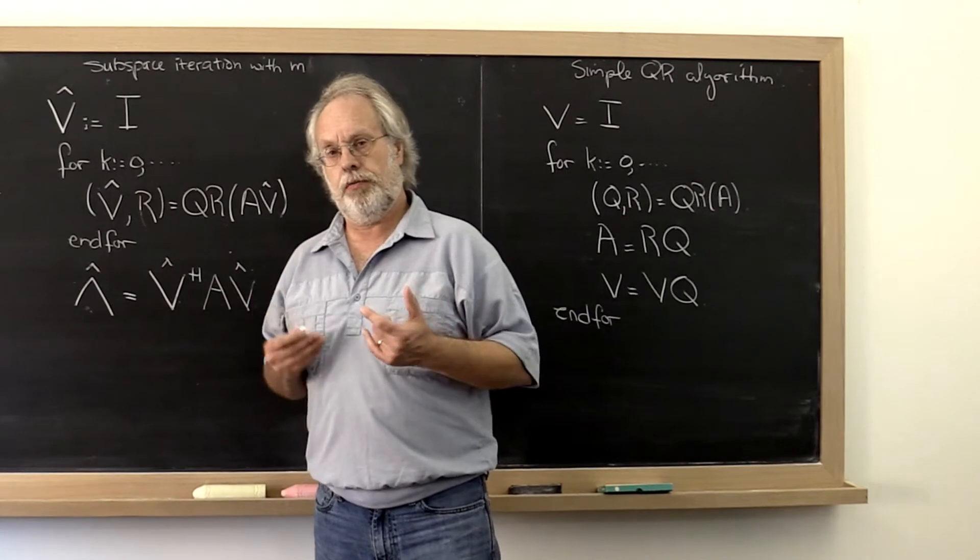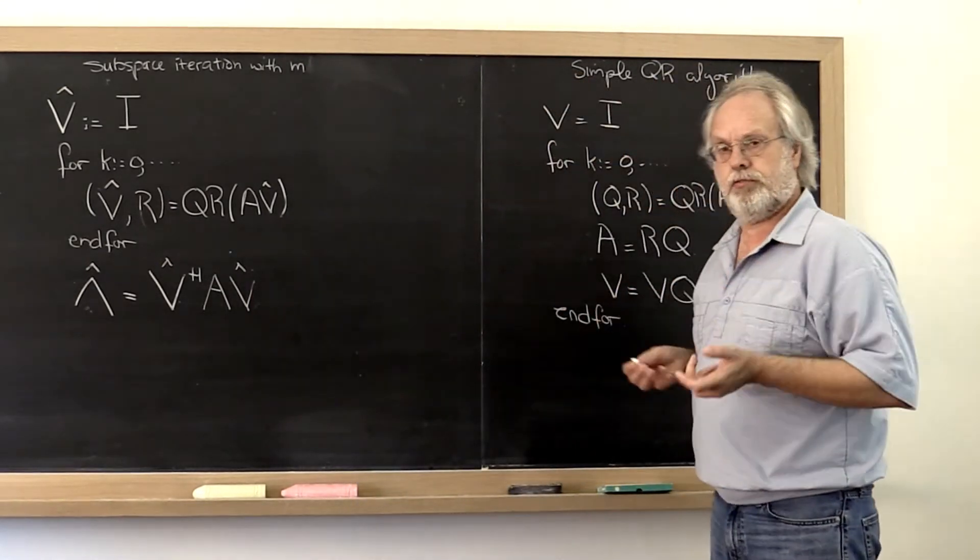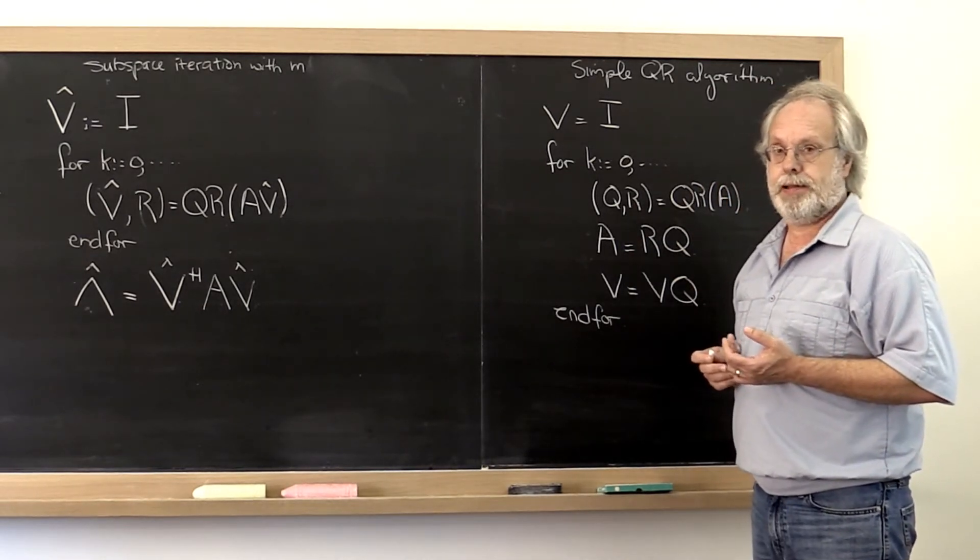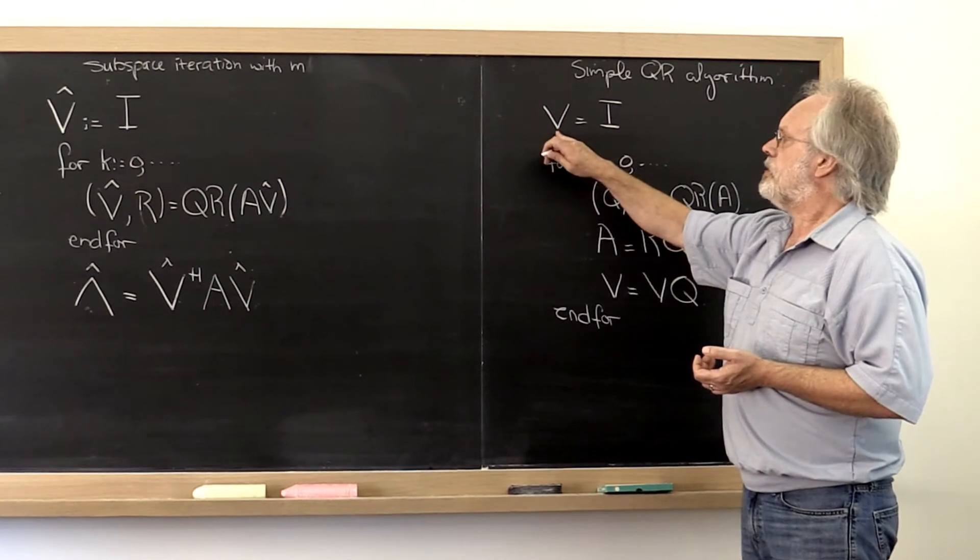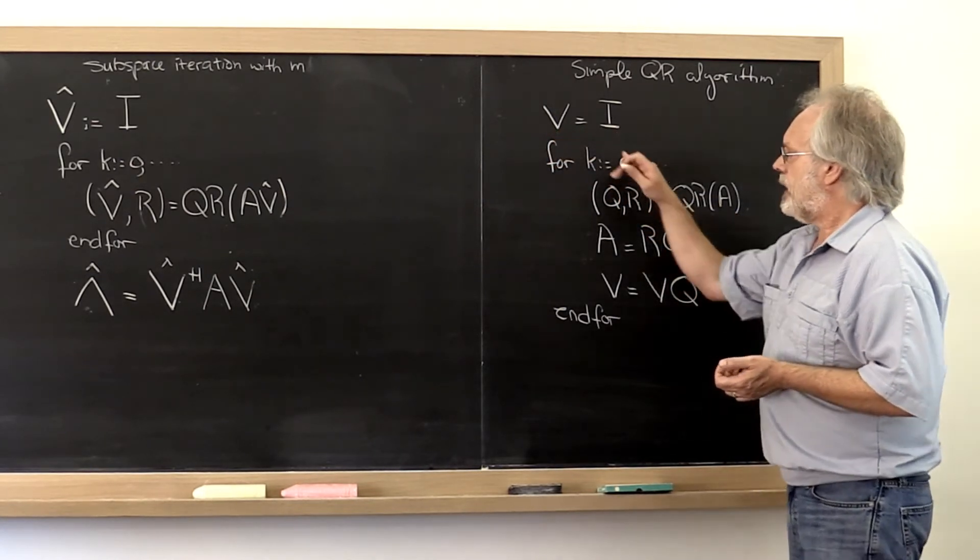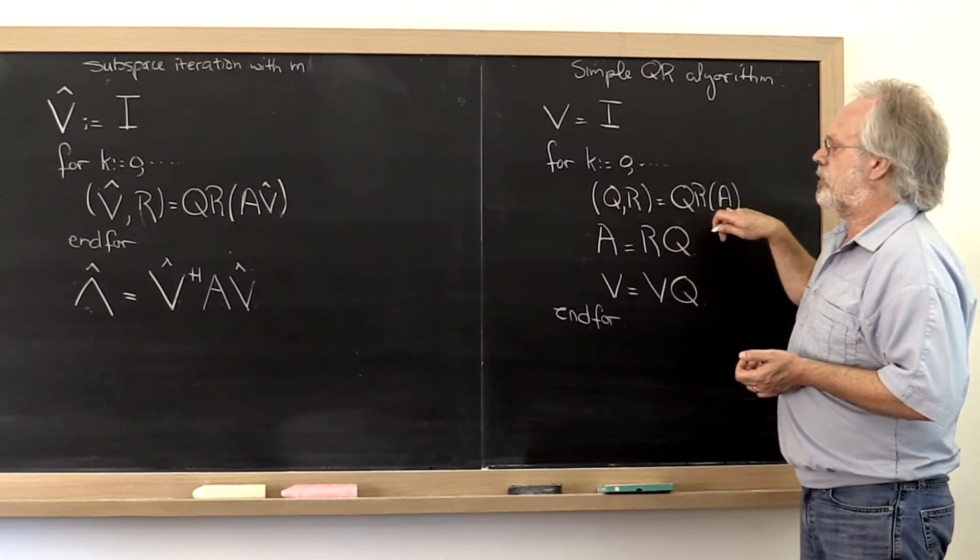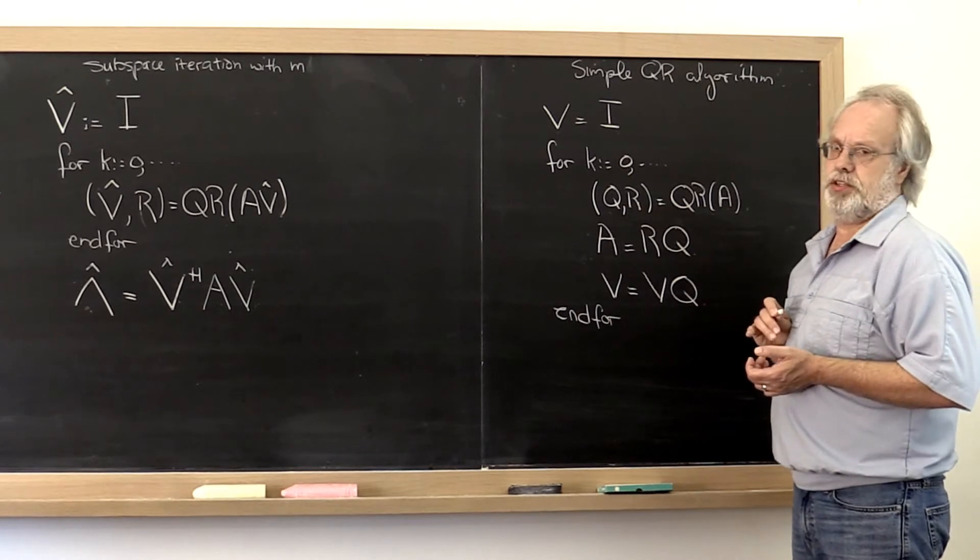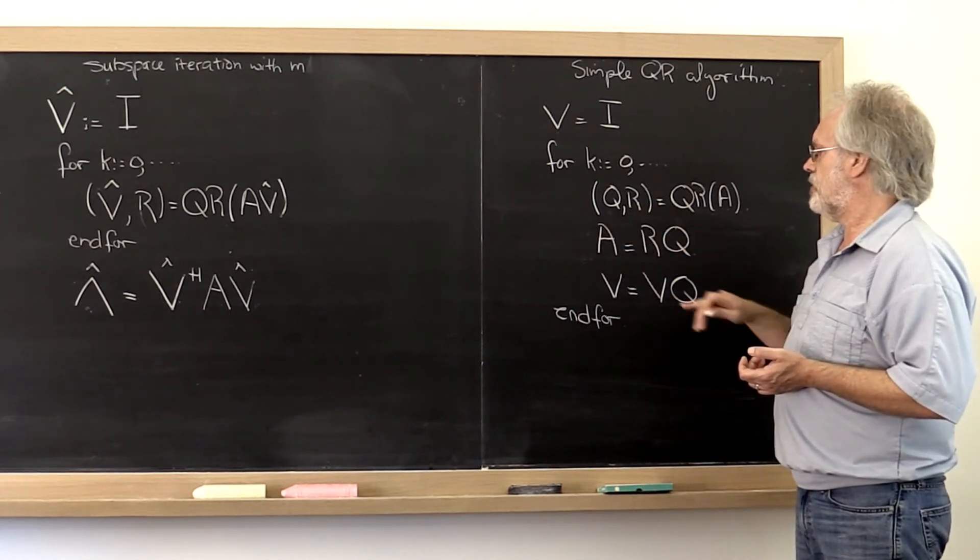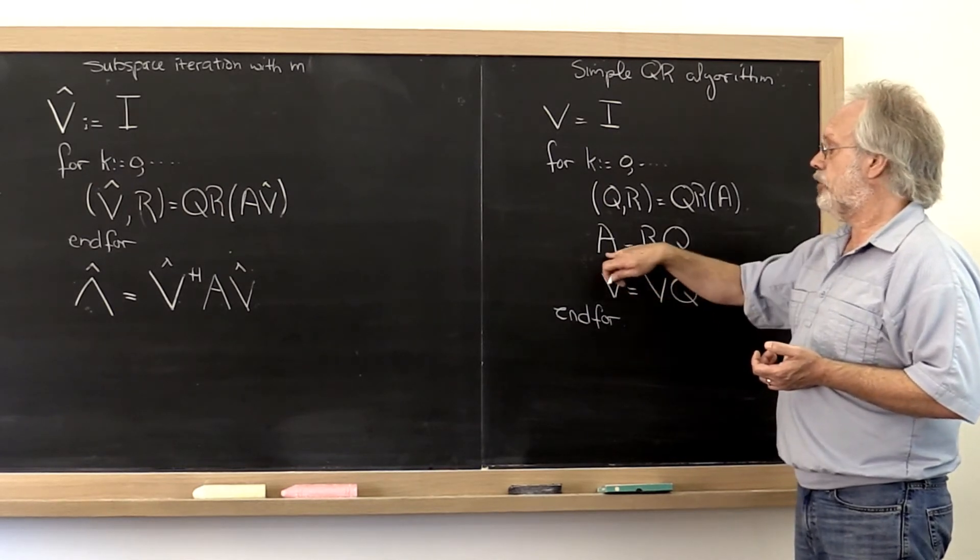There is an alternative way of formulating this that is actually kind of remarkable and it's known as the QR algorithm. It also says start with the matrix V equal to I. But now in each iteration take your matrix A, compute its QR factorization, and once you have its QR factorization multiply R times Q, creating a new matrix A.